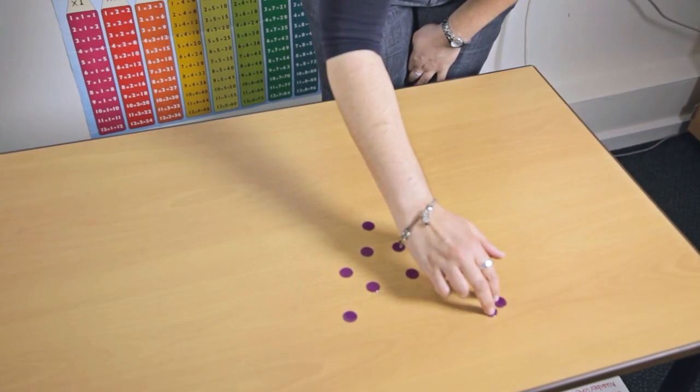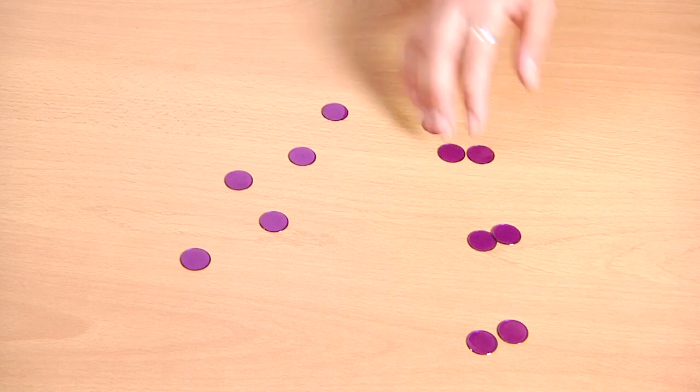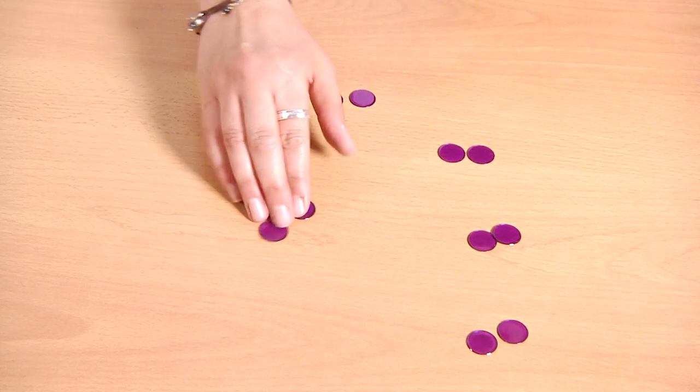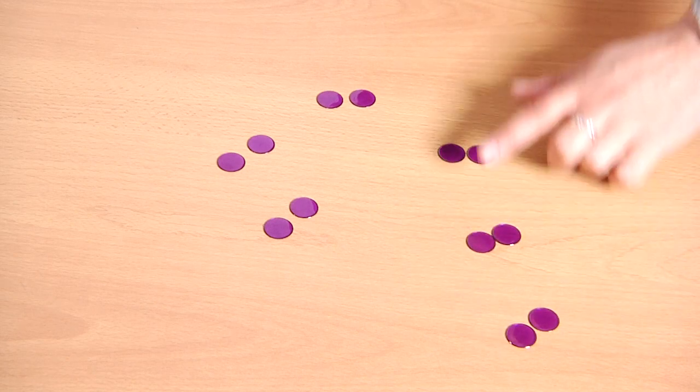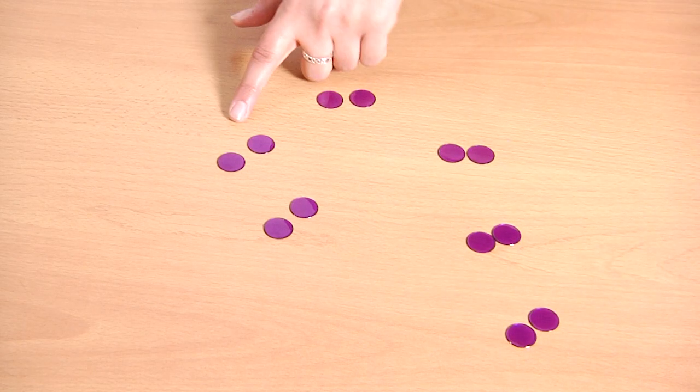Learning to count in steps can then make it easier to count a group of objects. So we can group them into twos and then count them using that step counting. Two, four, six, eight, ten, twelve.